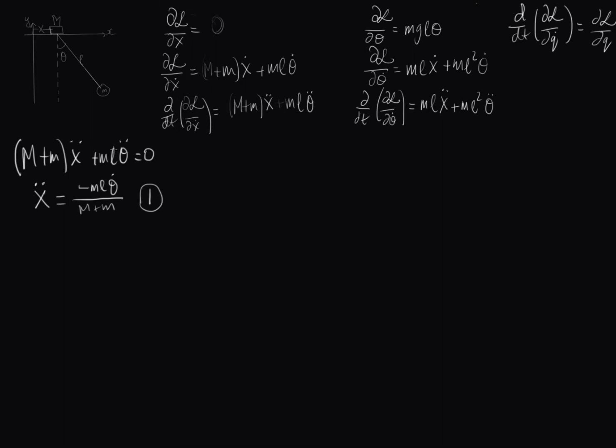So you might be able to see now where I'm going with this. So now let's do the same thing for our theta components. So we end up with M L x double dot plus M L squared theta double dot I should say, is equal to M G L theta. So a second equation. Now we can see I can substitute in this equation here for X double dot in here, and then I'll end up with an equation that is only in terms of theta double dot and theta. So let's do that.